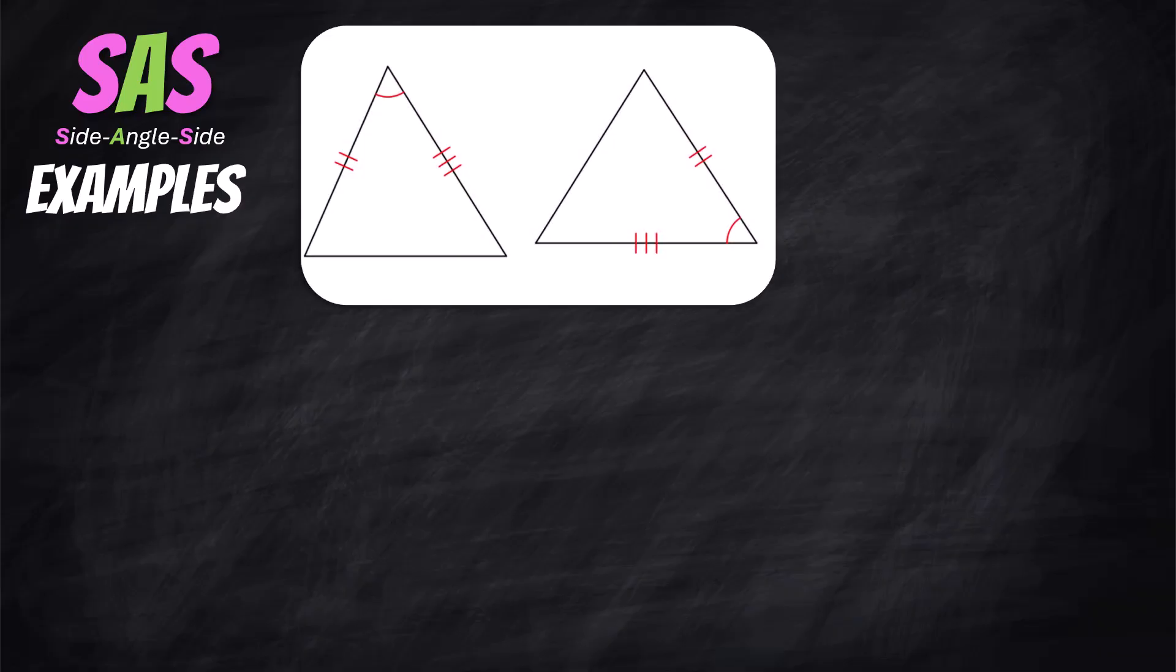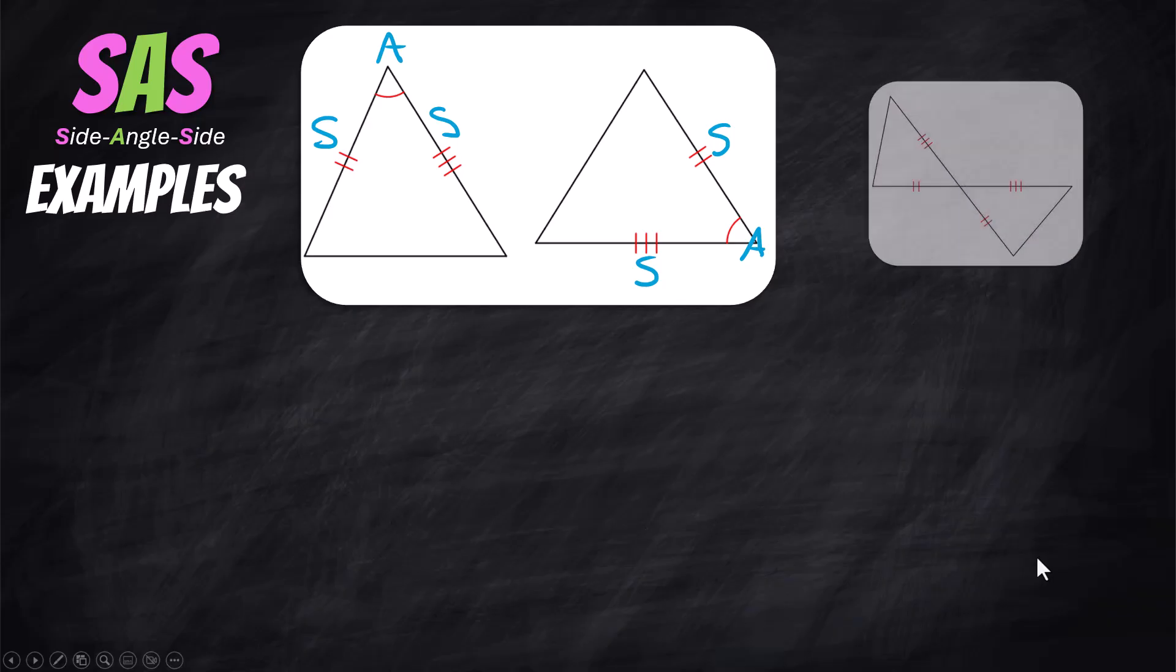Let's look at some examples. All right, this is two triangles that have side angle side congruence. You have one pair of congruent sides, you have an angle congruent to another angle, and then you have a second pair of congruent sides. But the important thing here is that the angle is between the two sides. It's in the middle here. Side angle side, side angle side.